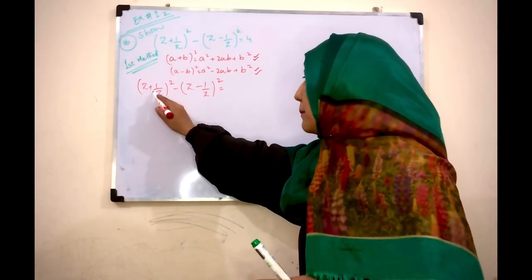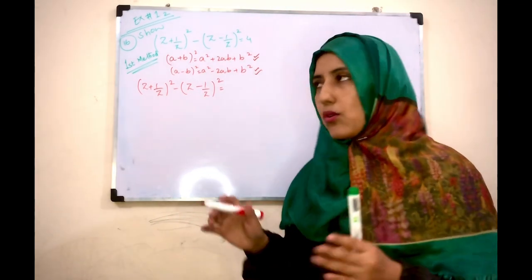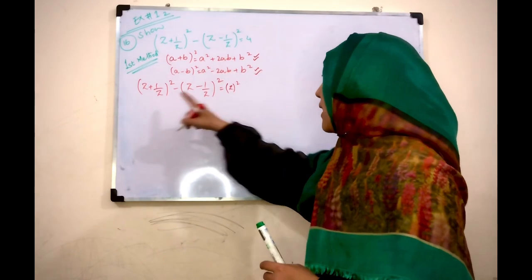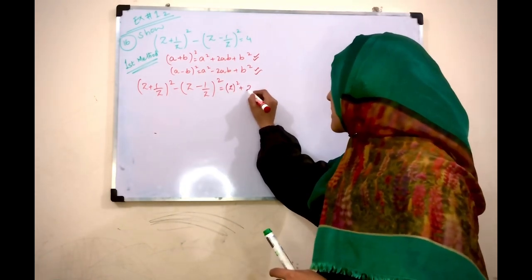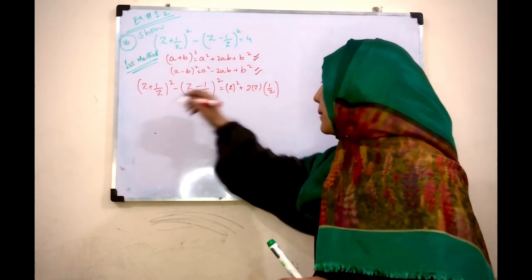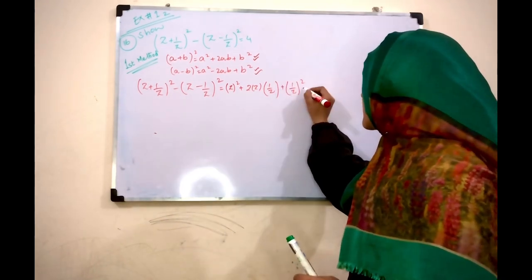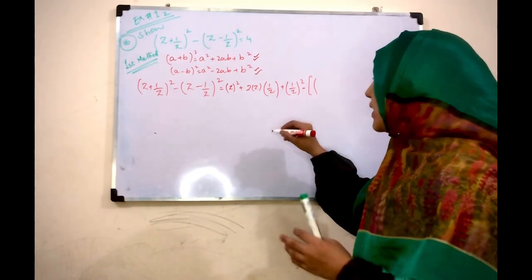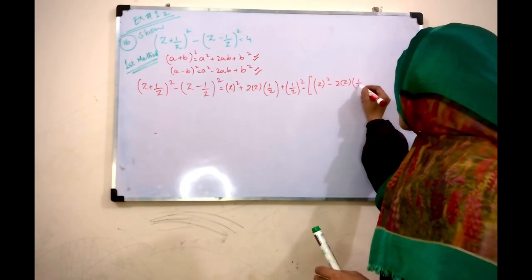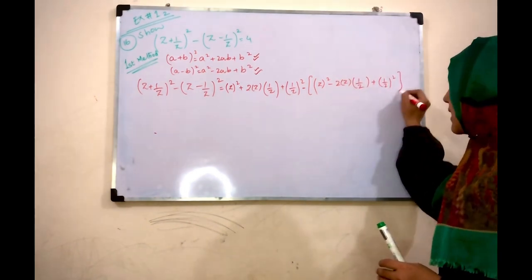Here apply (a + b)² minus (a - b)². We apply the formula: z² plus 2z(1/z) plus (1/z)² minus bracket, z² minus 2z(1/z) plus (1/z)².